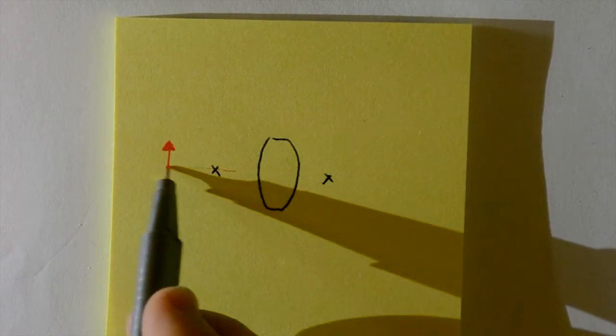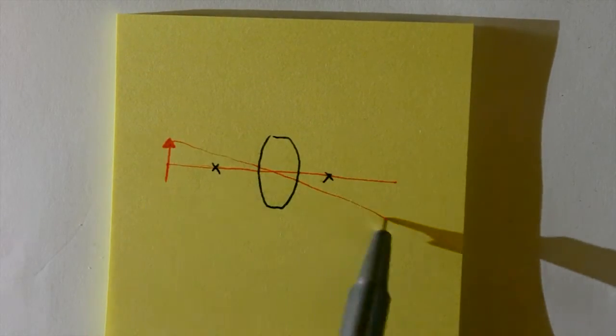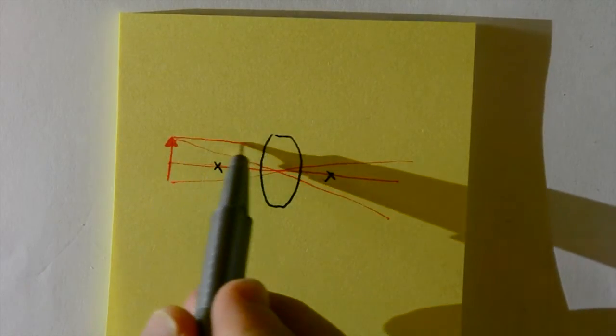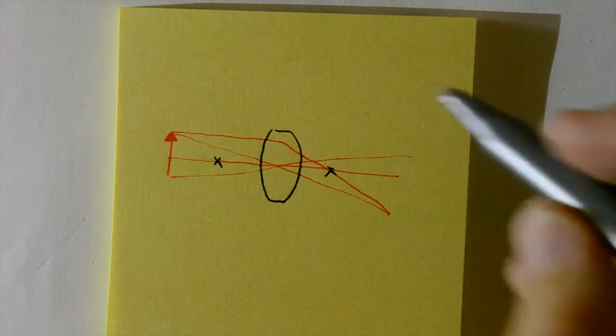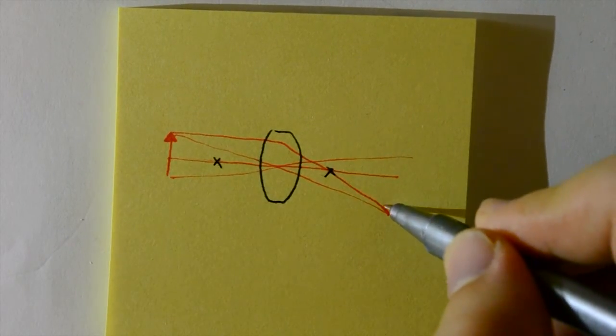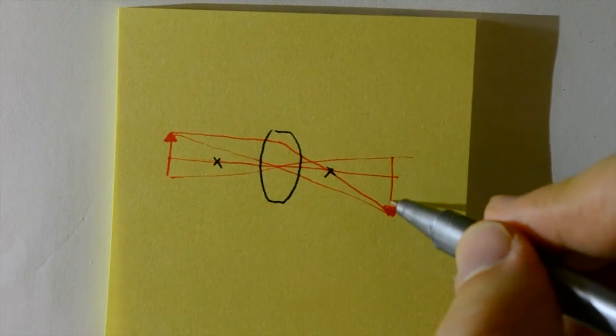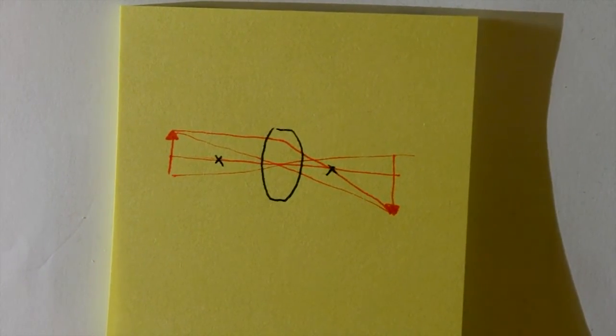Any lines that travel through the centre of the lens do not change direction. However, any arrows that enter the lens parallel to the ground pass through the focal point on the other side of the lens. When two lines that originated from the same point on the left of the lens meet on the right of the lens, you can use this point to draw in the image of the object, which is how the object appears through the lens.